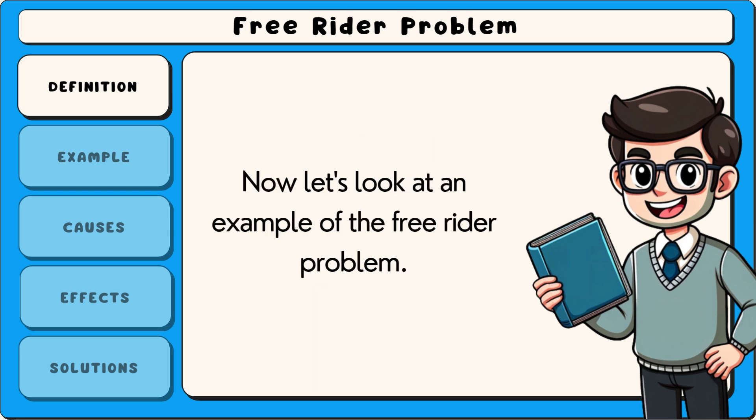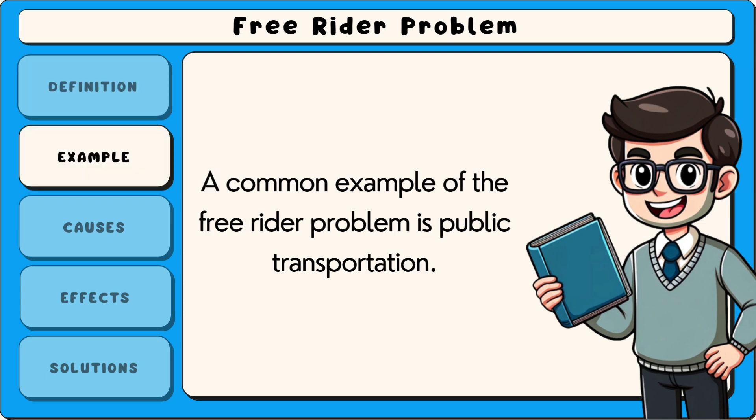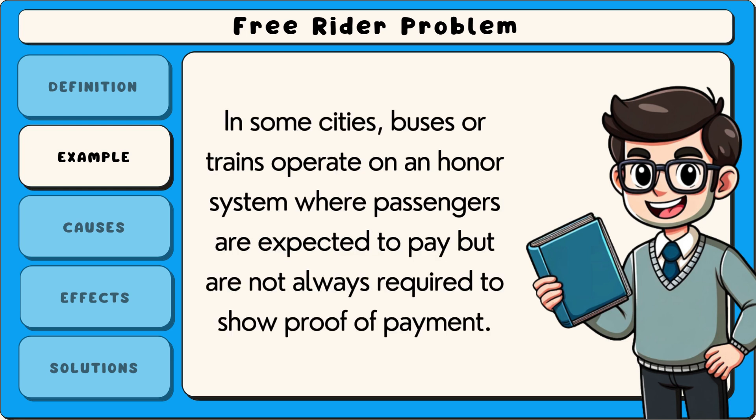Now let's look at an example of the free rider problem. A common example is public transportation. In some cities, buses or trains operate on an honour system where passengers are expected to pay but are not always required to show proof of payment.